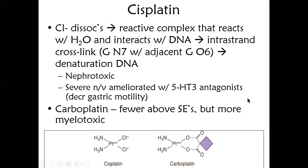The next drug is cisplatin. A chloride is dissociated from the complex, forming a reactive species that reacts with hydrogen and interacts with DNA. It cross-links DNA at nitrogen 7 adjacent to oxygen 6 position, causing denaturation of DNA. One important side effect of cisplatin you must know is nephrotoxicity — it is highly nephrotoxic, so if a patient already has kidney disease, cisplatin is not a preferable choice.